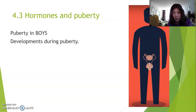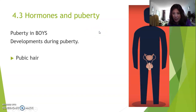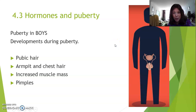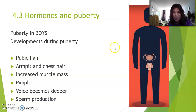Let's talk about puberty in boys. During puberty, lots of things are happening to your body — some identical to what happens to girls, and some different. Pubic hair is one of those things that hormones trigger around puberty. Then there's armpit hair and chest hair — armpit hair can also happen in girls, but chest hair is specifically for boys. There's also increased muscle mass, pimples, and the voice becomes deeper. Sperm production also starts to happen.